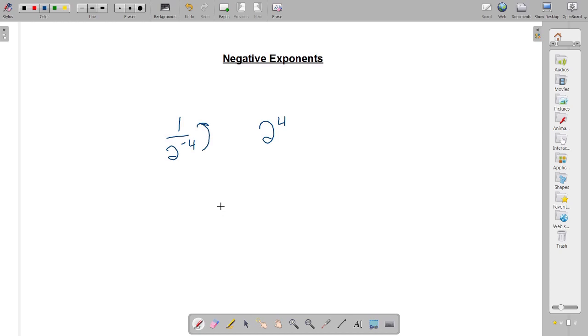So whenever you see a negative exponent, just think about moving it down in the denominator, or if it's already in the denominator, you just move it up. So something like 3 to the negative 3 power is 1 over 3 cubed.